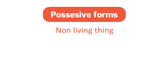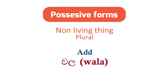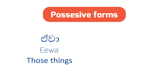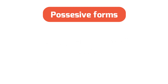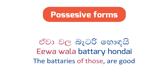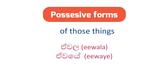If you're talking about a plural non-living word, you add the word wale. For example, ewa means those things, and ewa wale means of those things. Example sentence: ewa wale battery hondai — the batteries of those things are good. In day-to-day life, you might hear people say this as ewa wale or sometimes ewa ye.